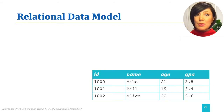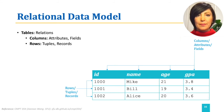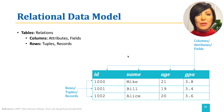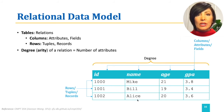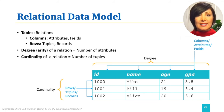Columns of the tables representing the relations are also referred to as attributes or fields. Rows of the tables for relations are also referred to as tuples or records. The number of attributes in the table representing a relation is called degree of a relation, also called arity. The number of tuples in the table representing a relation is called cardinality of a relation.